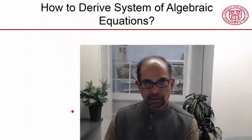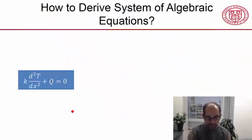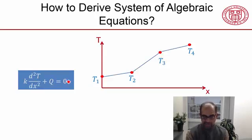Let's look at how to derive the system of algebraic equations starting from our boundary value problem. So we have our differential equation and we have boundary conditions, which I haven't shown here in the interest of brevity. And we have the shape for the temperature that we have assumed.